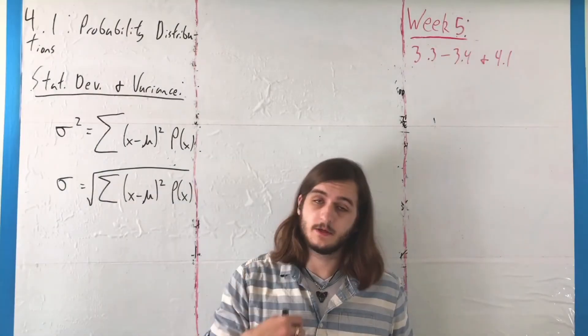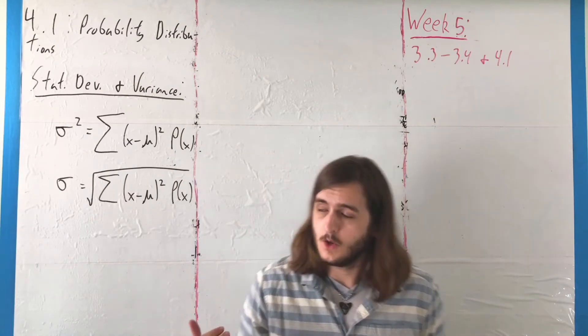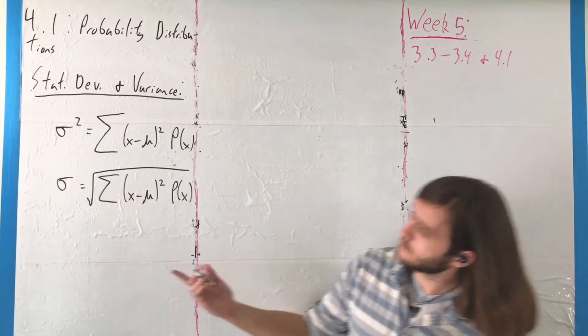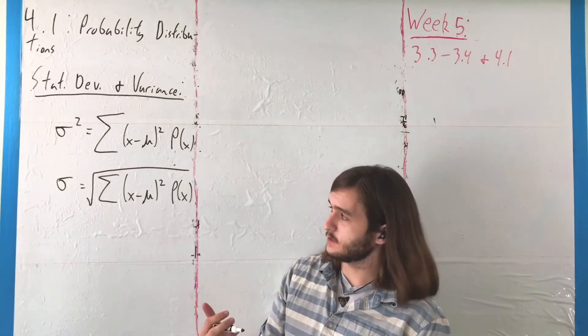The last thing we're going to cover from this section is variance and standard deviation. The formulas here are actually very similar to what we had with the data points in Chapter 2.